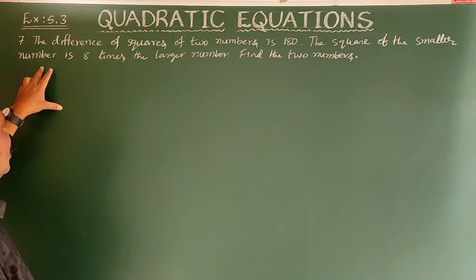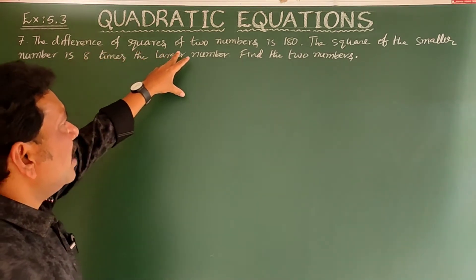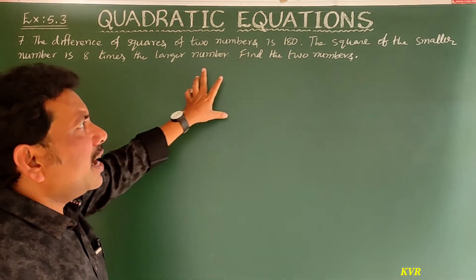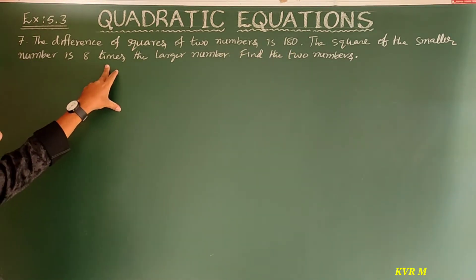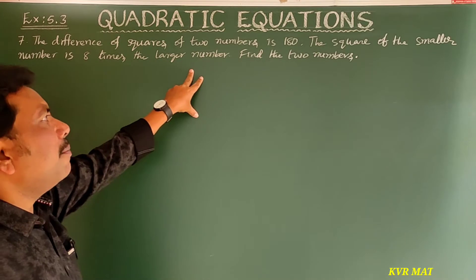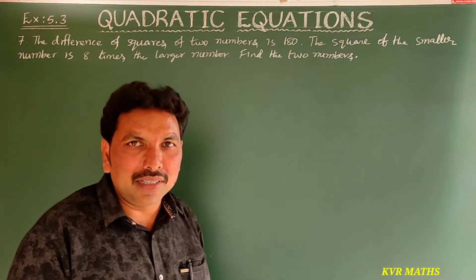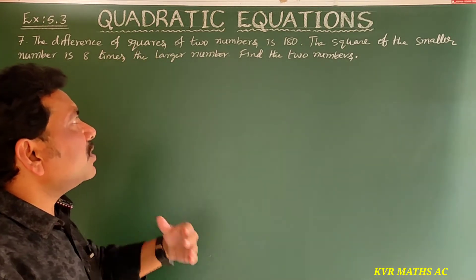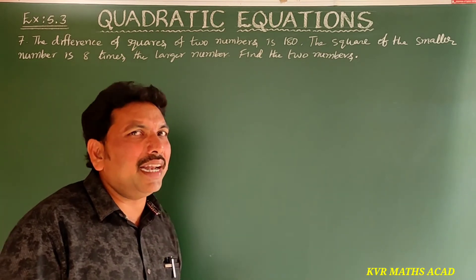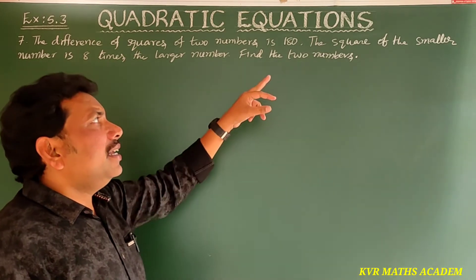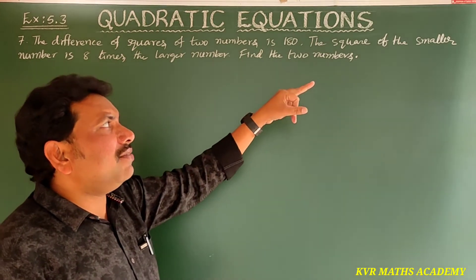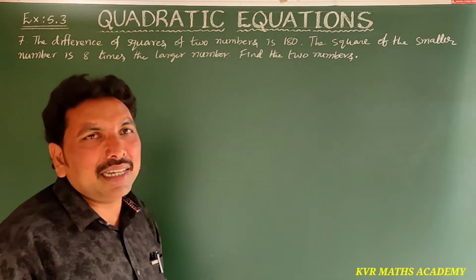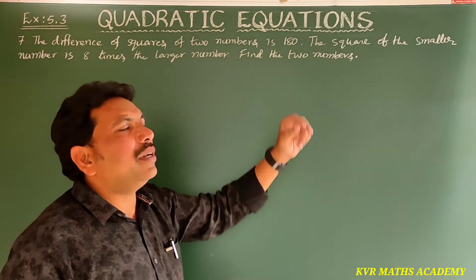See the 7th question. The difference of squares of 2 numbers is 180. The square of the smaller number is 8 times the larger number. Find the 2 numbers.